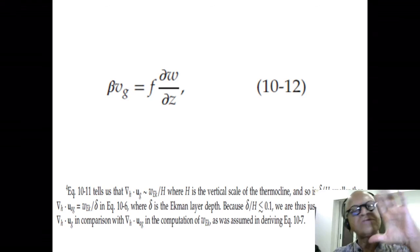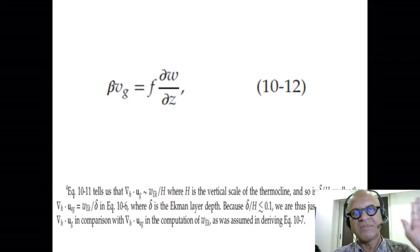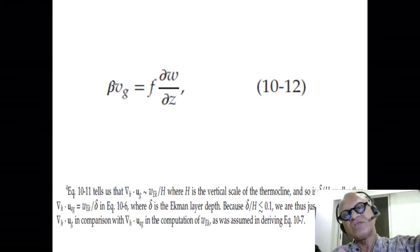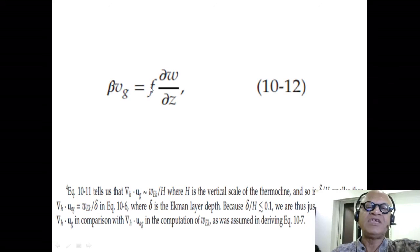Which is almost always true, except when you go into very shallow seas and so on. But when we are talking about the open ocean, Ekman layer is always much smaller than the entire ocean. In that case, we get beta v_g equals F dw/dz.